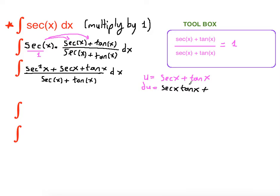Plus what is the derivative of tangent x? The derivative of tangent x is secant squared x dx. So this is exactly what we have on top. This is going right in terms of u, since on top everything is our du and at the denominator we have u.